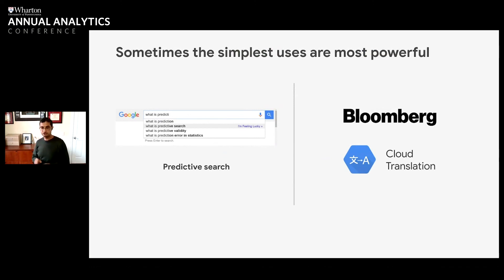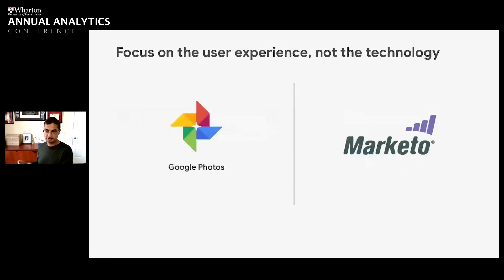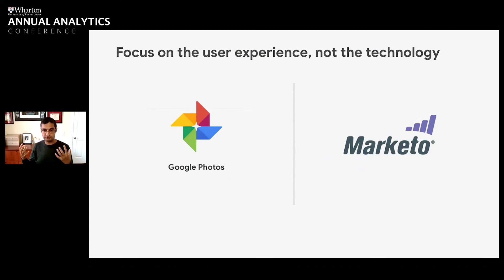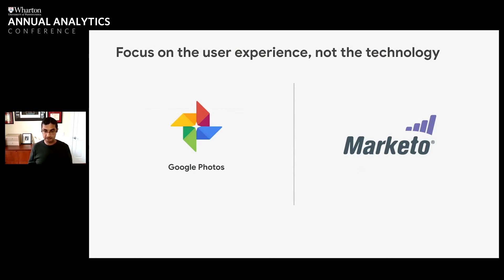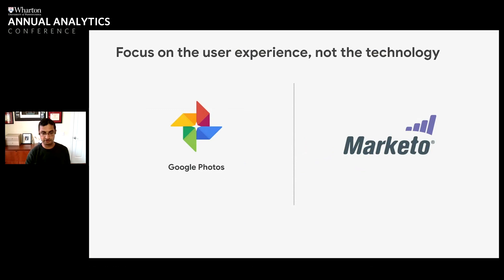The third thing is that you should focus on the user experience and not the technology. The technology is only a means to an end, and the end is the user experience. A great example is Google Photos, where even my in-laws and my parents are able to understand how AI makes a difference for them — they can search in Google Photos and get every picture of their grandkids. What they don't know is that behind the scenes there's powerful AI backing that, but they don't need to know because it's integrated well into the experience. The more customers integrate AI into the overall user experience, the better it will be.